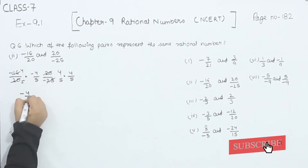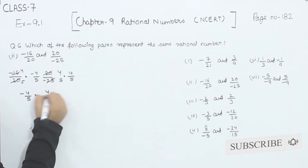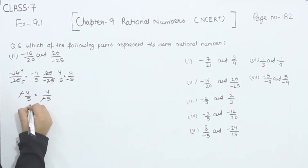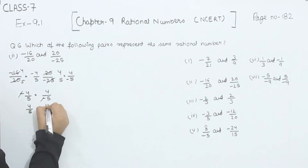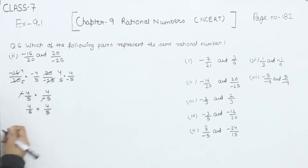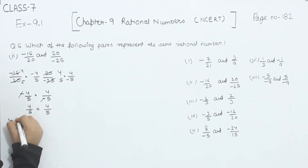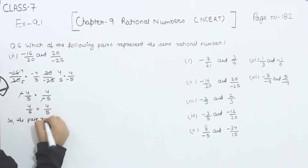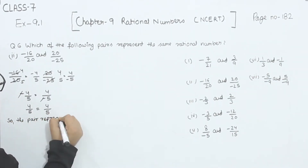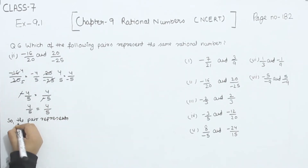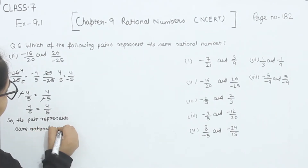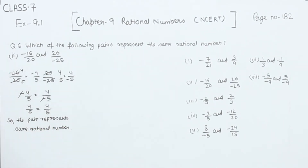So we have minus 4 by 5 and 4 by minus 5. The negatives cancel, giving us 4 by 5 and 4 by 5 — they are equal. The given pair represents the same rational number.